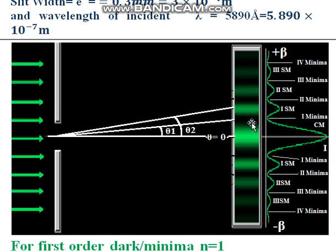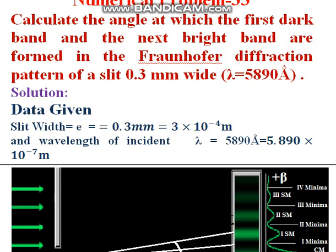In this numerical problem we have to find the angular position of the first minima and the first secondary maxima. The minima satisfy the equation: e·sinθ = ±nλ. The secondary maxima satisfy the equation: e·sinθ = ±(2n+1)·λ/2.